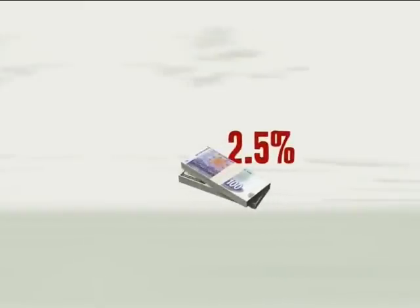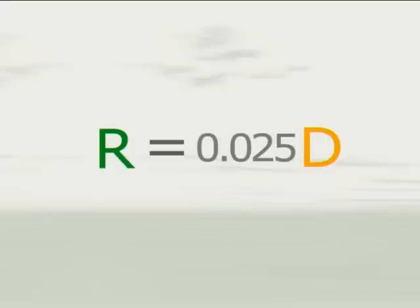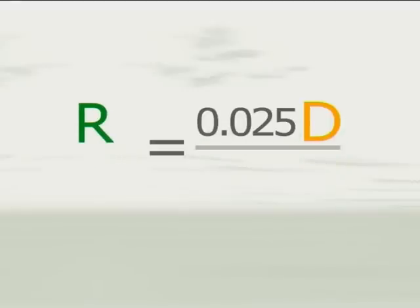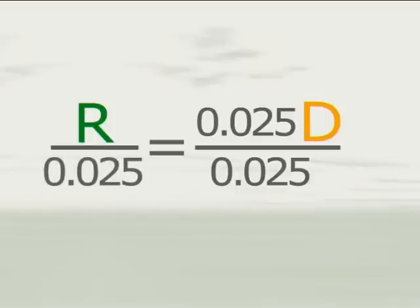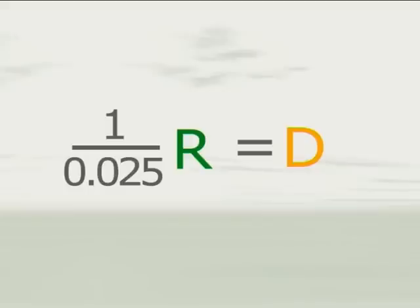We can write it as follows: cash reserves, R, have to be equal to 2.5% of total deposits, D. 2.5% is 2.5 divided by 100, or 0.025. To work out potential demand deposits, we have to do a little algebra. We know R equals 0.025 of deposits, D. So to work out D, we divide both sides by 0.025, and that leaves us with D equals 1 divided by 0.025 times R. And 1 divided by 0.025 is 40.